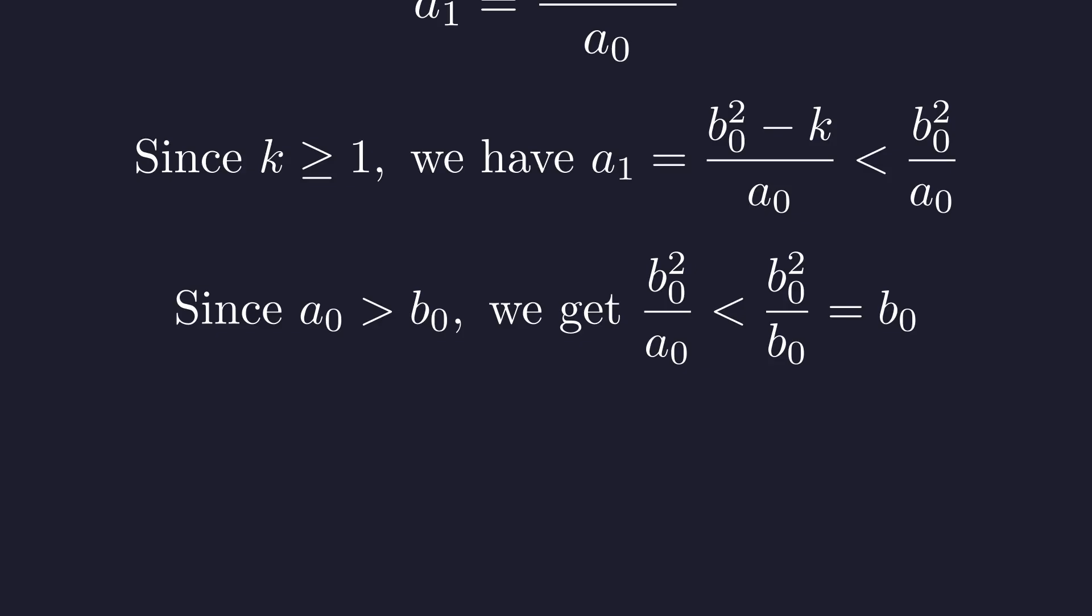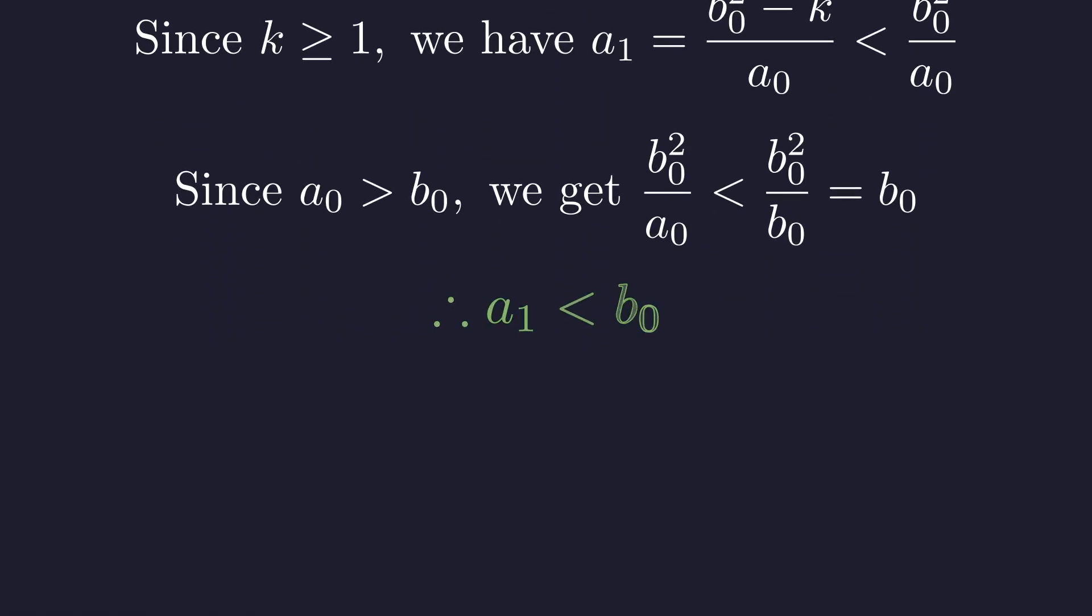Here's the crucial step. Since a0 is greater than b0, when we divide b0 squared by a0, we get something smaller than b0 squared divided by b0, which equals b0. Combining these inequalities, we get the stunning result: a1 is strictly less than b0.